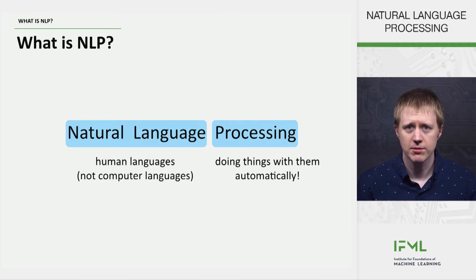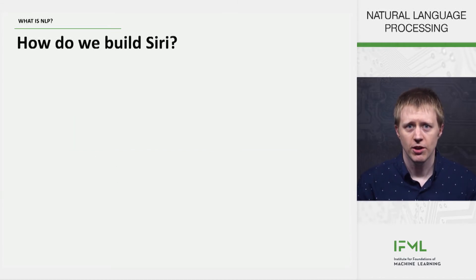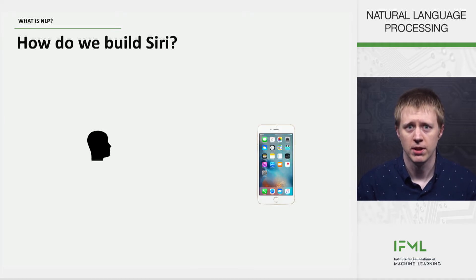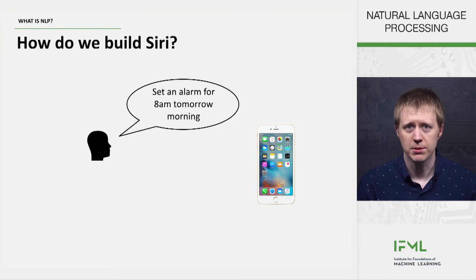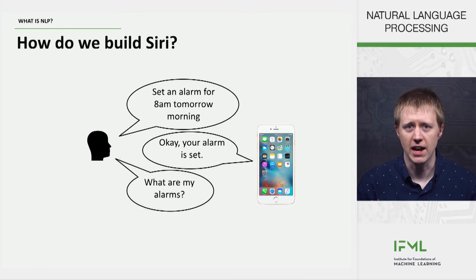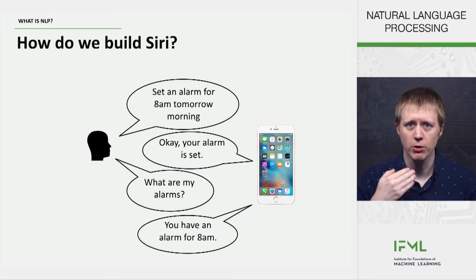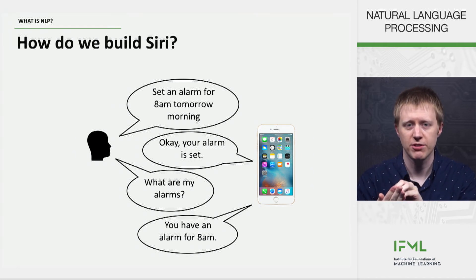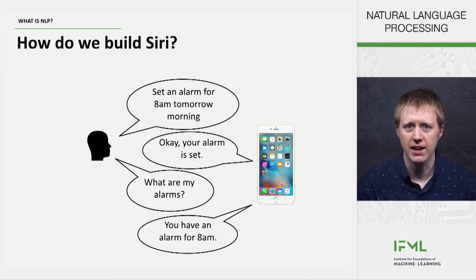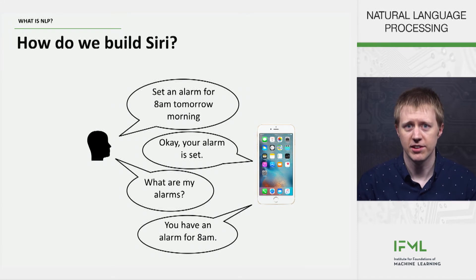What should these systems be able to do? For example, Siri, or whatever interface you use to talk to your phone. You could say things like, 'set an alarm for 8am tomorrow morning,' and your phone will do it. And your phone actually kind of understood what you were asking for and managed to set your alarm. So why is this natural language processing? Because we asked it something in natural language — we didn't have to push the right buttons or frame this in a computer language. We were instead just able to ask it like we would ask any other person, and the system is able to handle this.